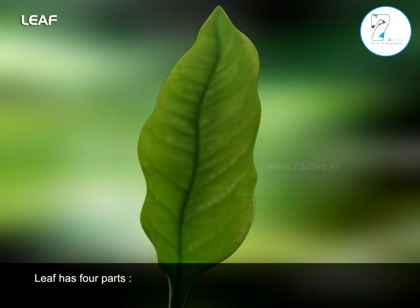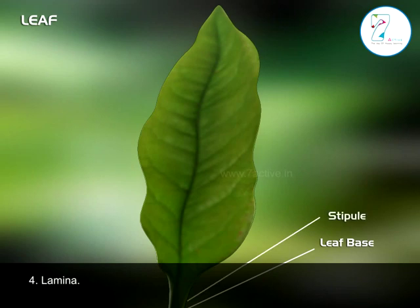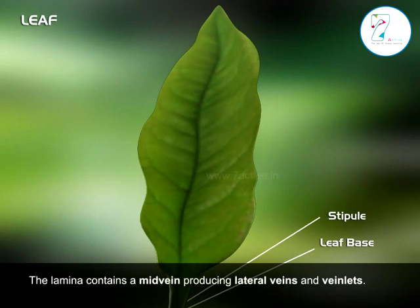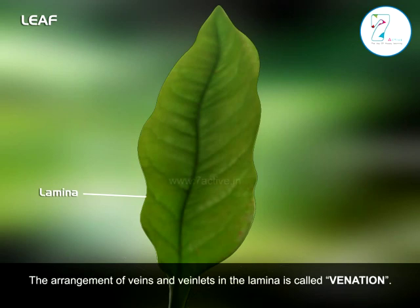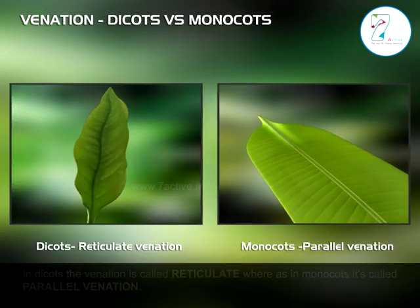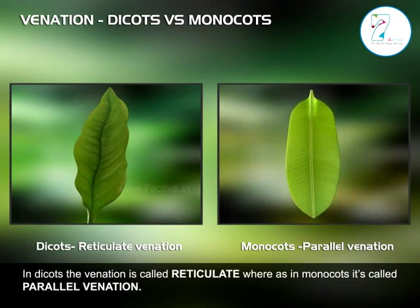The leaf has four parts: leaf base, stipule, petiole, and lamina. The lamina contains a mid-vein producing lateral veins and veinlets. The arrangement of veins and veinlets in the lamina is called venation. In dicots, the venation is called reticulate, whereas in monocots, it is called parallel venation.